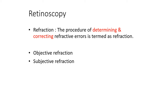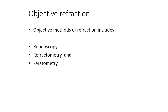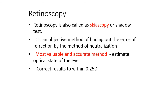Refraction is the procedure of determining and correcting refractive errors. There are two types: objective refraction and subjective refraction. Objective methods include retinoscopy, refractometry, and keratometry. Retinoscopy is also called skiascopy or shadow test — it is an objective method of finding out the error of refraction by the method of neutralization.